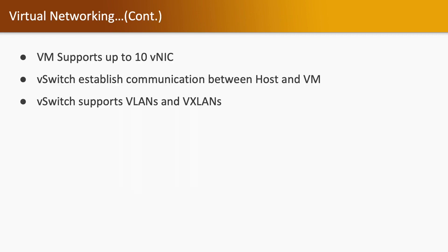The maximum number of virtual NICs that can be assigned to one virtual machine is 10 VNICs. The virtual switch available on the virtualization layer establishes the communication between the host and virtual machines. Whatever networking is required on the virtual machine and host, that will be performed via the virtual switch. The virtual switch also supports network segregation using VLAN and VXLAN.